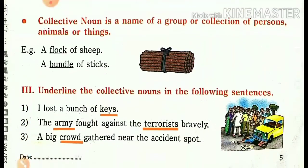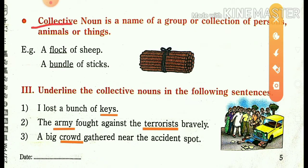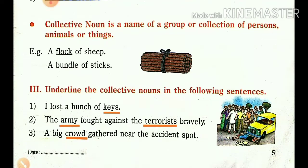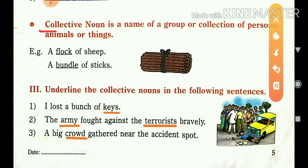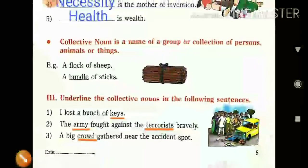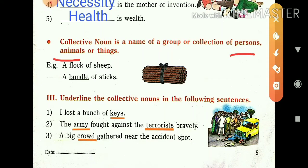The next kind of noun is Collective Noun. The Collective Noun is a name of a group or a collection of persons, animals, or things. Collective Noun means more than two people, animals, or things are grouped together — more than two objects are there.